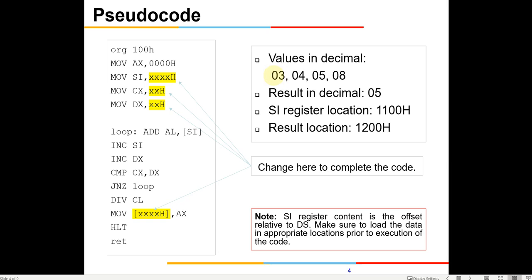You need to initiate by putting numbers into specific memory locations. The number 03 will be in the first memory location, and that memory location needs to be put into SI so that your number starts at that memory location. CX is essentially the total number of numbers — in this particular case there are four numbers taken. You need to demonstrate it by taking a few other numbers also. DX needs to be initialized to zero, and then you add AL and the value at SI so that initially AL is zero and the first number gets added, then you increase SI.